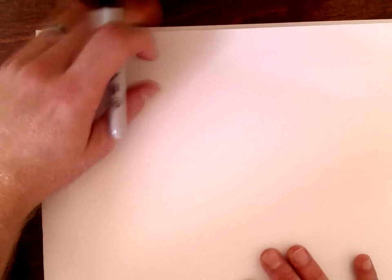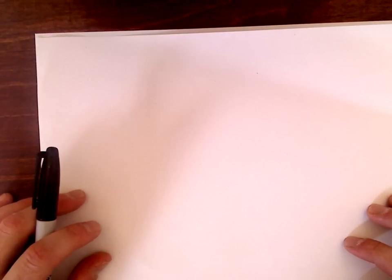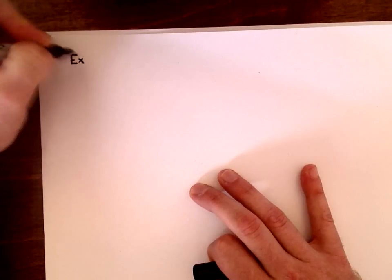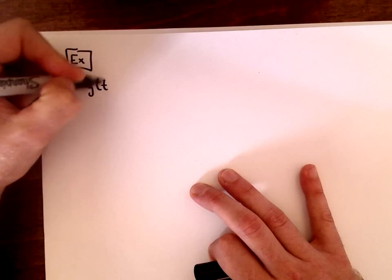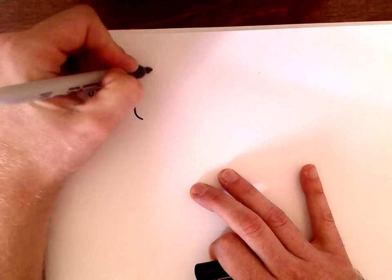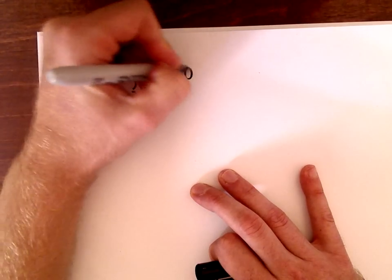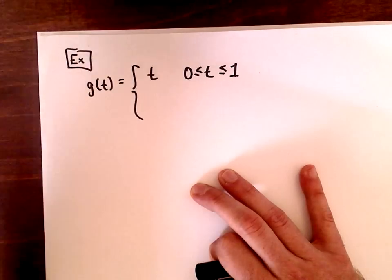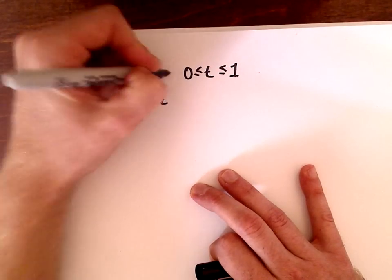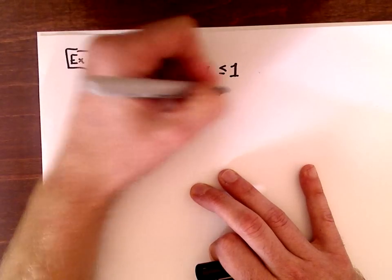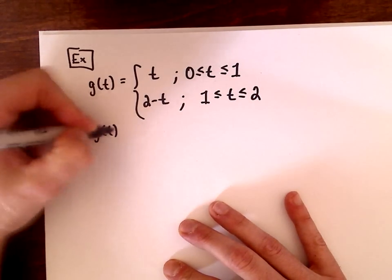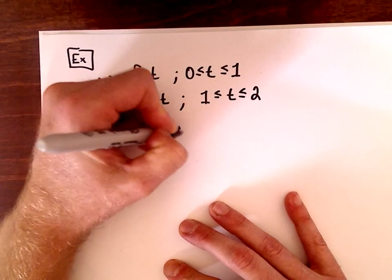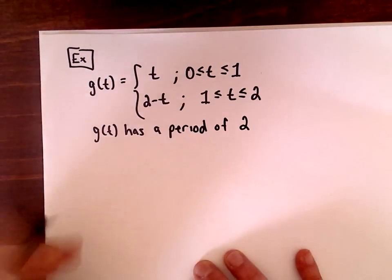Let's take a specific example. We have the function g of t equal to t for t between 0 and 1, and equal to 2 minus t for t between 1 and 2, and g of t has a period of 2.